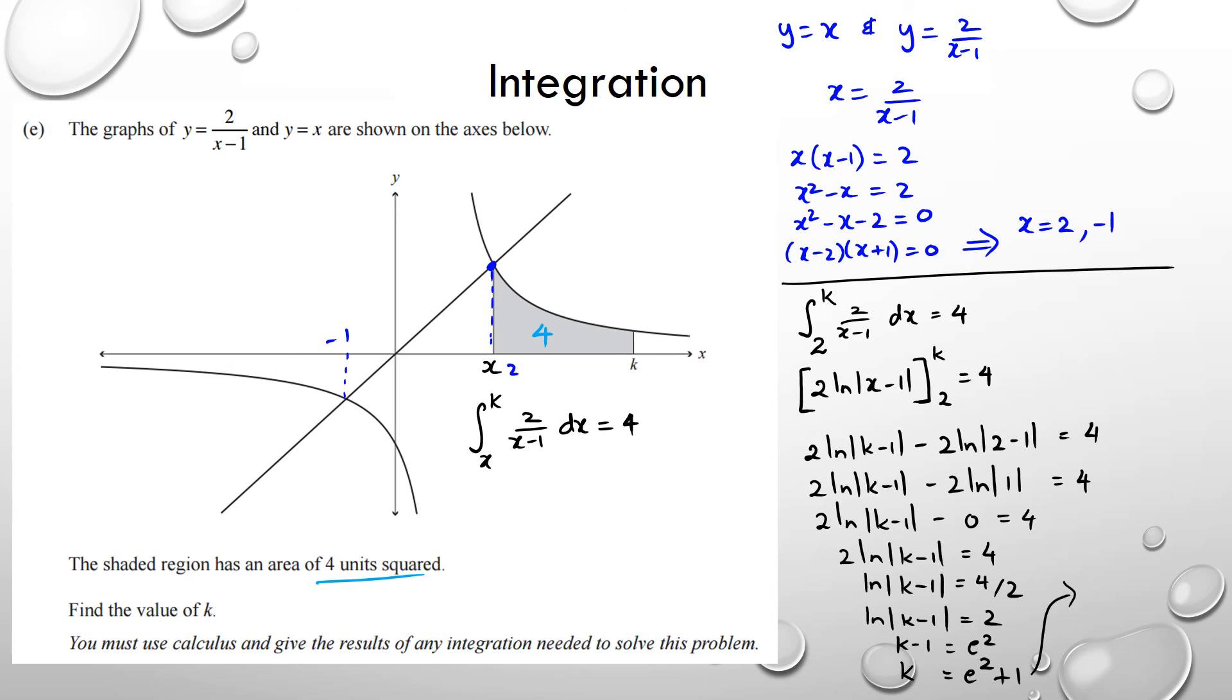Now you can leave your answer as that, but if you want to simplify it, you're going to get k is equal to 8.39. And that's how you get k for this question.